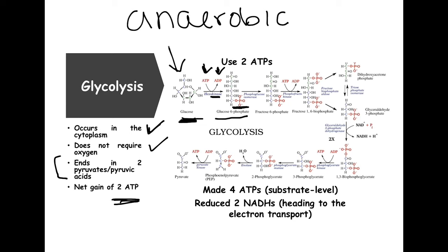Now glucose-6-phosphate is confined to the cell and can't leave, but at this point it's not stable and has to be rearranged. The best way to rearrange it is to use an isomerase — enzymes that change its structure. The phosphoglucose isomerase will convert it from glucose-6-phosphate to fructose-6-phosphate, because glucose and fructose are isomers of each other. The phosphate is still on the sixth carbon.